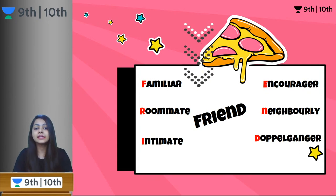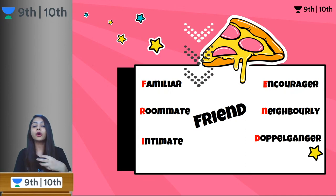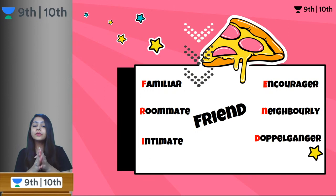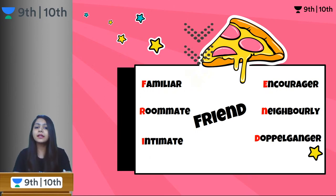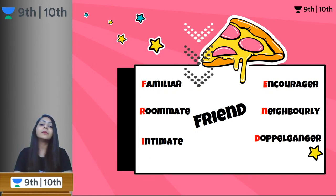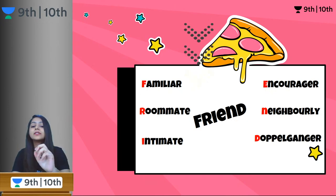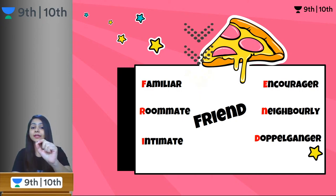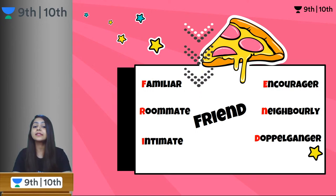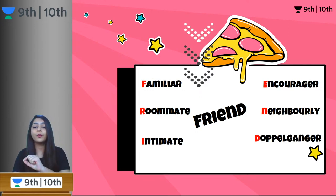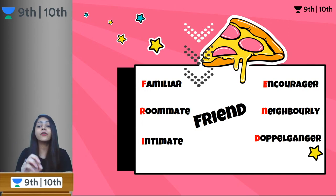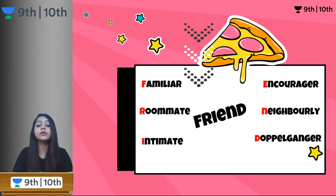Next on the list is FRIEND — a very simple word. Whenever we have to write words relating to a friend, that is where we miss out. So here is a list of 6 words arising from the letters in FRIEND: F for familiar, R for roommate, I for intimate, E for encourager, N for neighborly, and D for doppelganger.